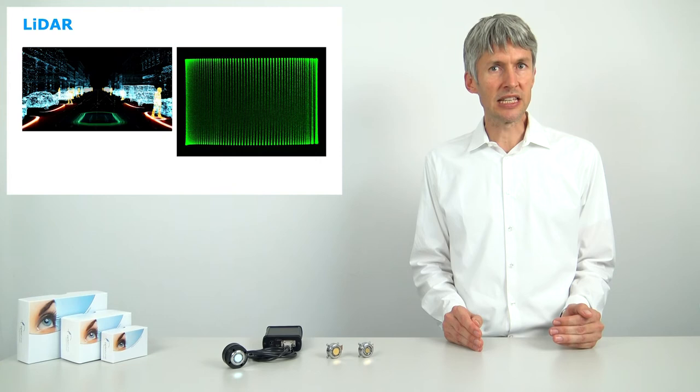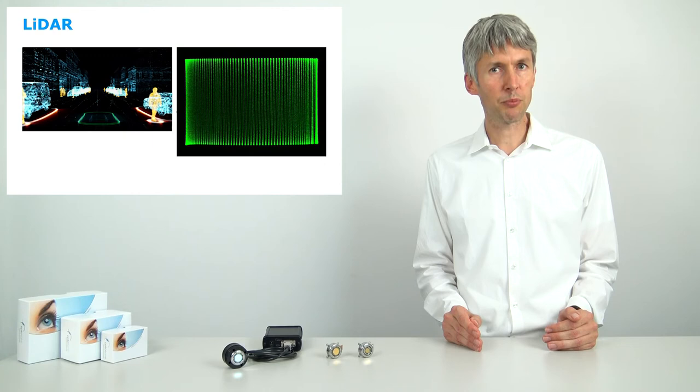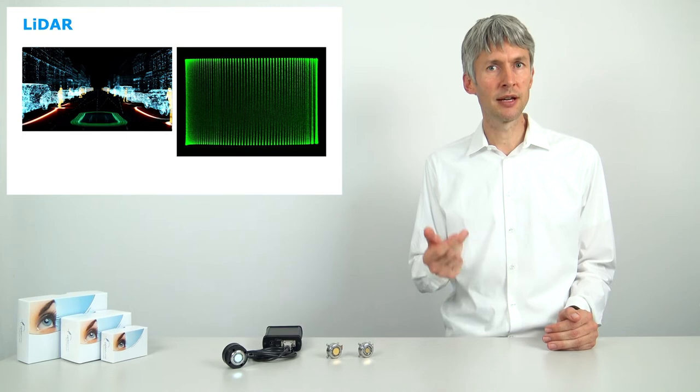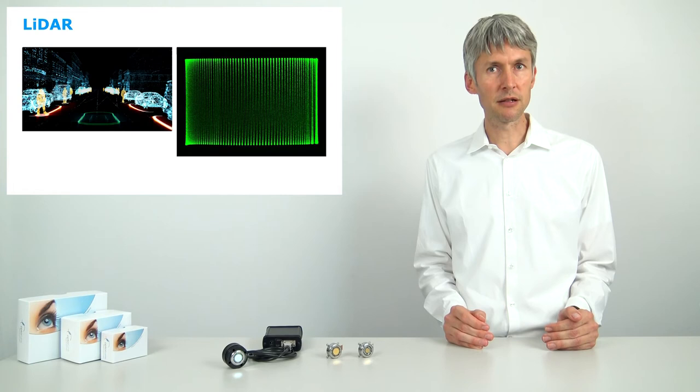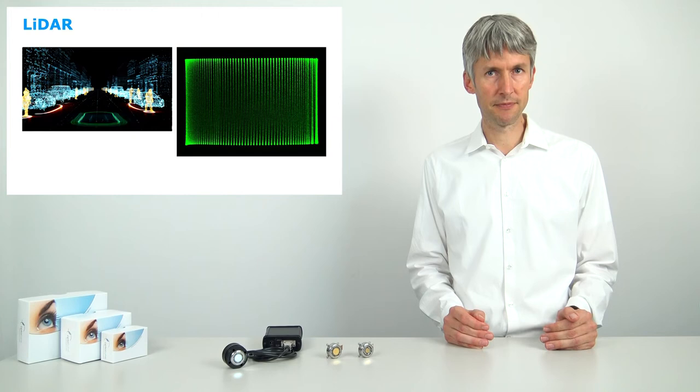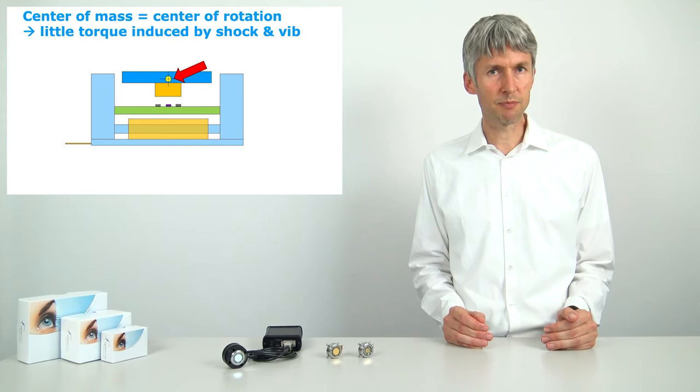The available solutions typically suffer from strong trade-offs regarding the four primary parameters: namely price, speed, clear aperture, and field of view. Another challenge are the environmental conditions such as temperature, mechanical shocks, and vibration. The relatively small moving mass, as well as the center of mass being located in the center of rotation, greatly reduces the impact of shock and vibrations on our voice coil mirrors.